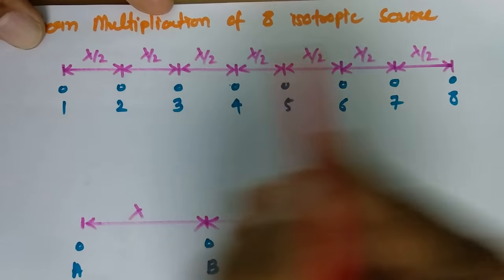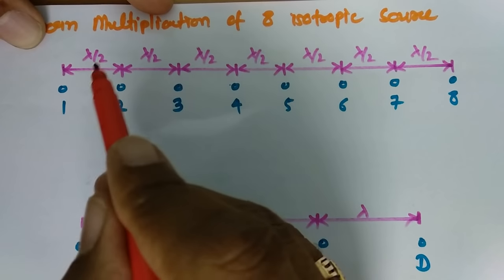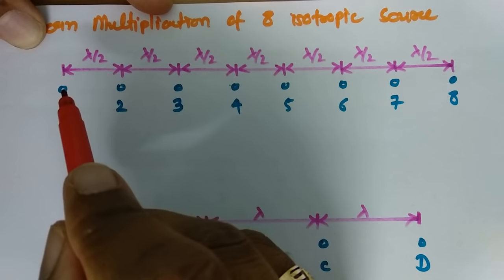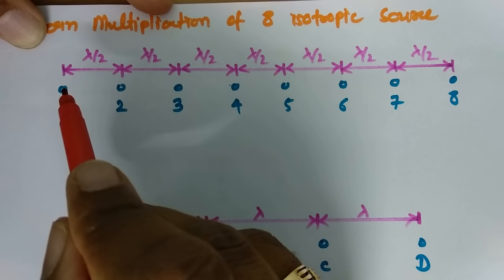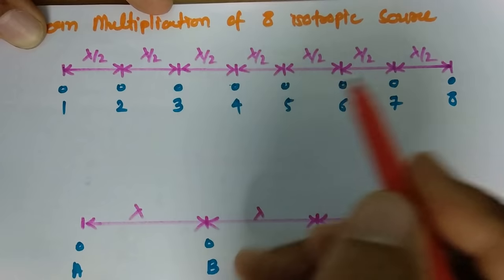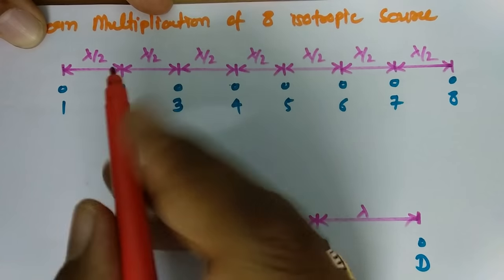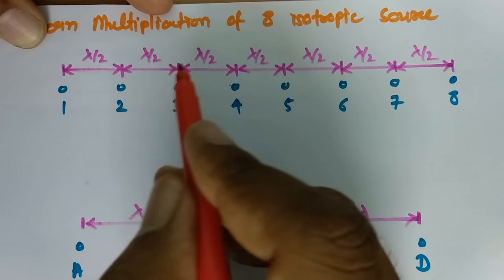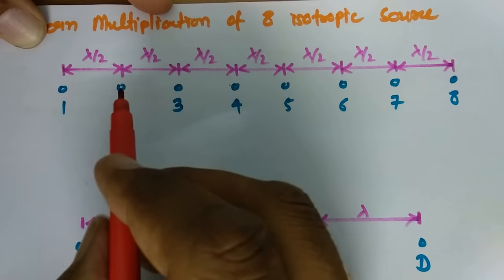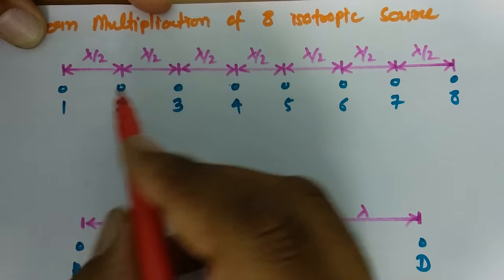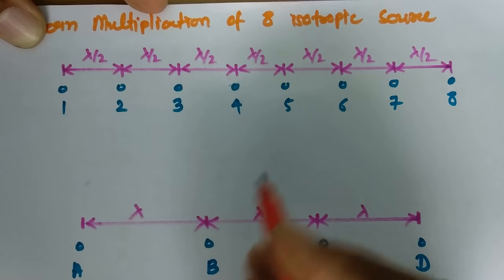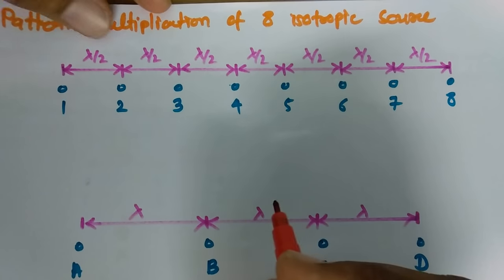All elements are separated by distance lambda by 2. So one can see 8 isotropic sources means point sources, numbered 1 through 8. All elements are separated by distance lambda by 2. Before I solve the complete example, let us try to understand what we are going to do here.